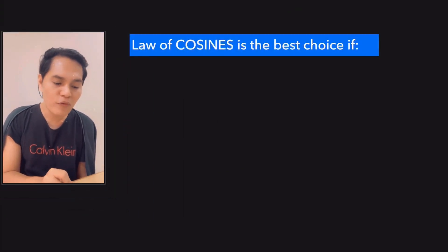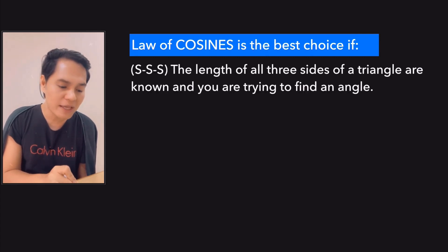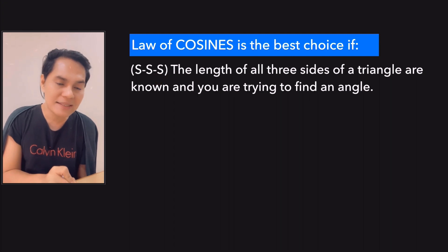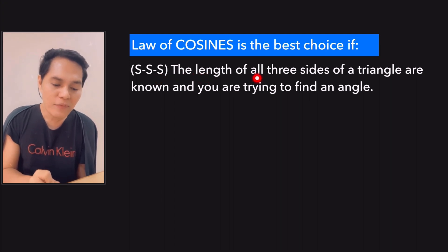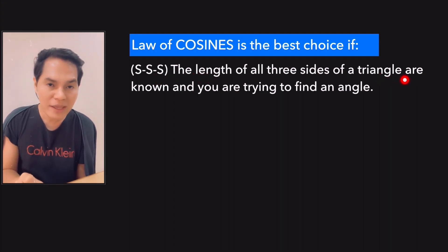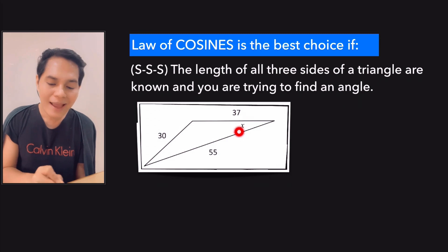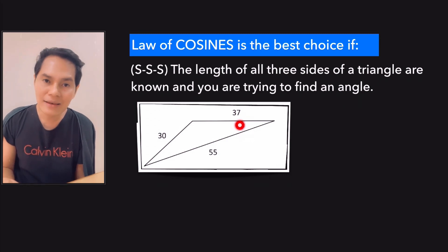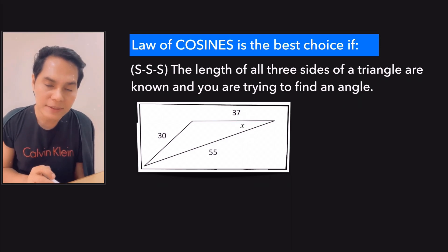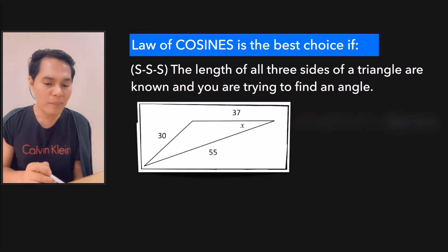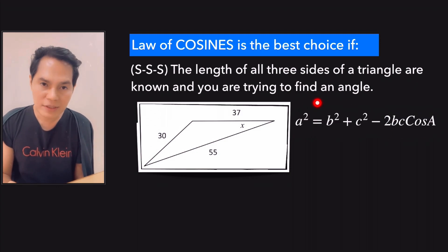Up next is the law of cosines. Remember that the law of cosines is the best choice for the SSS condition — side-side-side — meaning the lengths of all three sides of a triangle are known. Look at this illustration: all sides are given and you are trying to find an angle. So we apply the law of cosines.